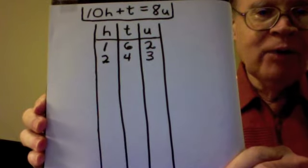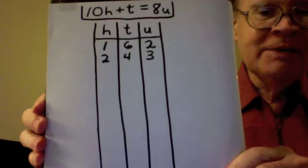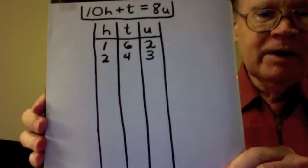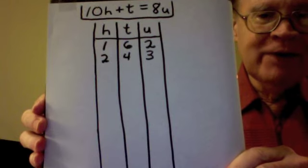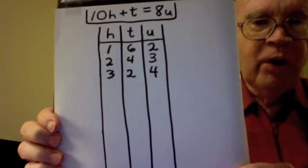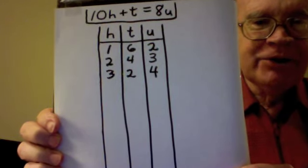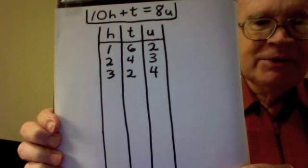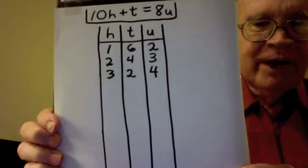u can equal 3, 3 times 8 is 24, 2 times 10 plus 4 equals 24. u can equal 4, 8 times 4 is 32, 10 times 3 plus 2 equals 32.